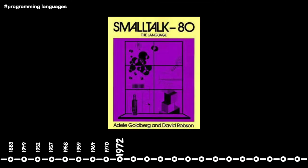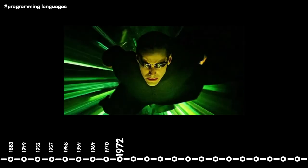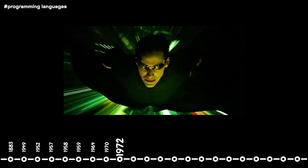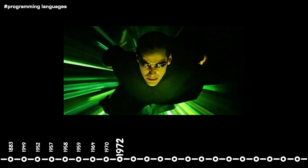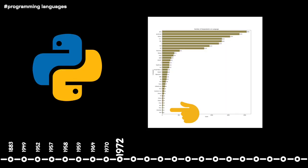In 1972, Smalltalk was first created by Alan Kay, Adele Goldberg, and others at Xerox. Its main innovation was allowing programmers to change code on the fly, and its primary use was for educational purposes. It would come to inspire several features found in more modern programming languages, like Python. In 2017, Smalltalk was the second most loved programming language on the Stack Overflow Developer Survey.